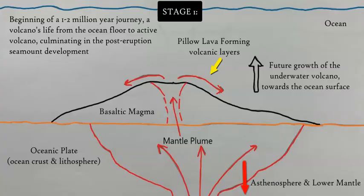Here we have Stage 1: the pre-shield stage. The tectonic hot spot — the mantle plume — is situated directly underneath the oceanic plate, in this case the Pacific Plate. The mantle plume provides large volumes of basaltic magma up through the crust and lithosphere. On the ocean floor, pillow lava emerges and flows through vents, beginning the initial construction of a volcano on the ocean floor. The magma at this stage is more alkalic, containing more sodium and potassium, and is lower in silica.